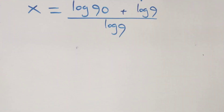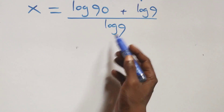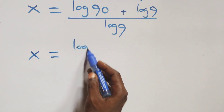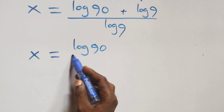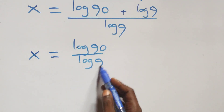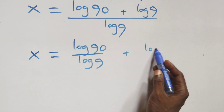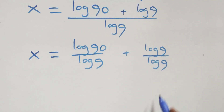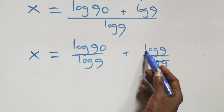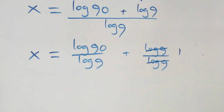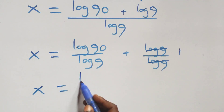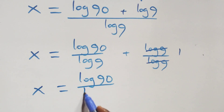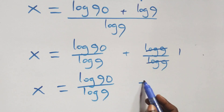The next step, we separate this into two fractions, and we have x equals to log 90 over log 9 plus log 9 over log 9. Log 9 cancels each other, we have 1 left. That is x equals to log 90 over log 9 plus 1.